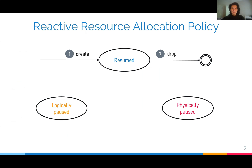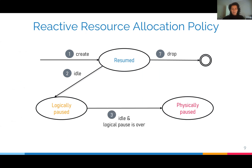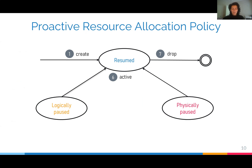We can summarize the current reactive resource allocation policy as a finite state automaton. When the customer becomes idle, resources are logically paused. During logical pauses, resources are available but customers are not billed. If the database stays idle during logical pause, we physically pause the resources. If during logical or physical pause the customer comes back online, we activate the resources. Now, we want to avoid the disadvantages of the reactive policy and convert it to a proactive policy.